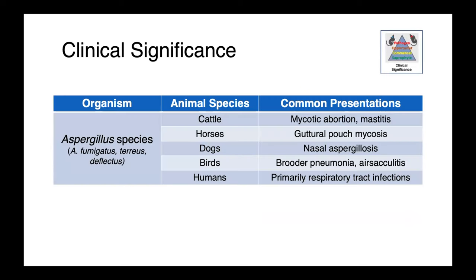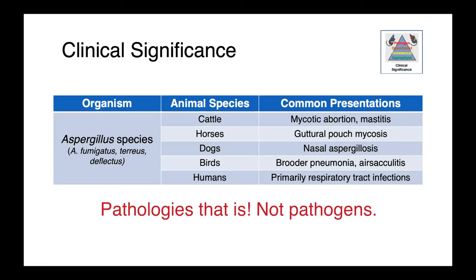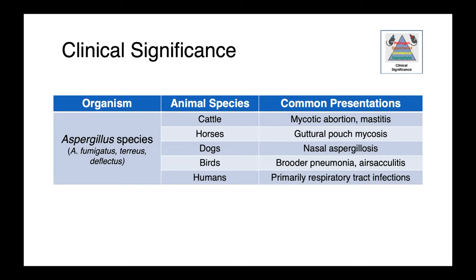Aspergillus species — including fumigatus, tereus, and deflectus — are associated with a variety of diseases in animals. In cattle, we see most commonly mycotic abortion, but also mastitis. In horses, Aspergillus is associated with guttural pouch mycosis. In dogs, we see nasal aspergillosis. In a wide variety of avian species, we see aerosacculitis and pneumonia, including brooder pneumonia in domestic poultry. In people, it is primarily associated with respiratory tract infections, although systemic disease is recognized in those who are severely immunosuppressed.